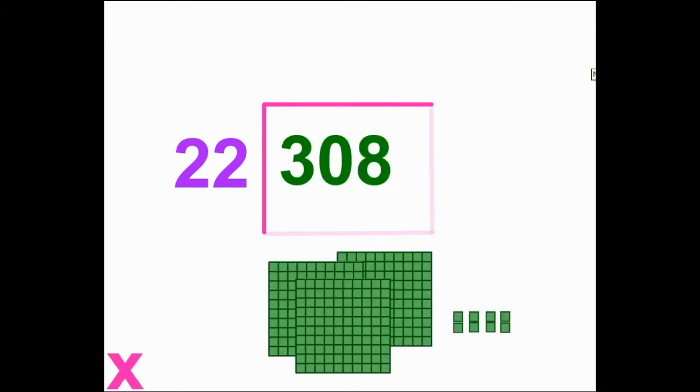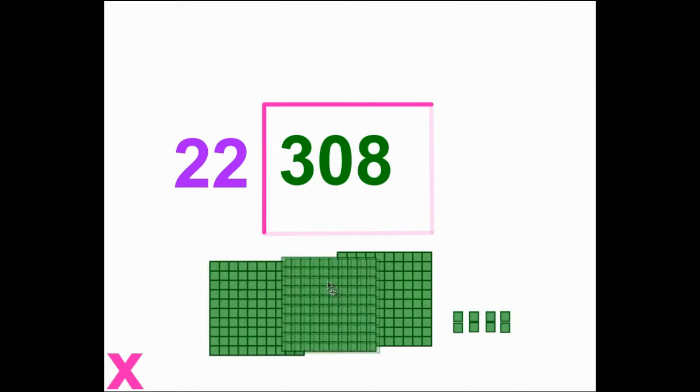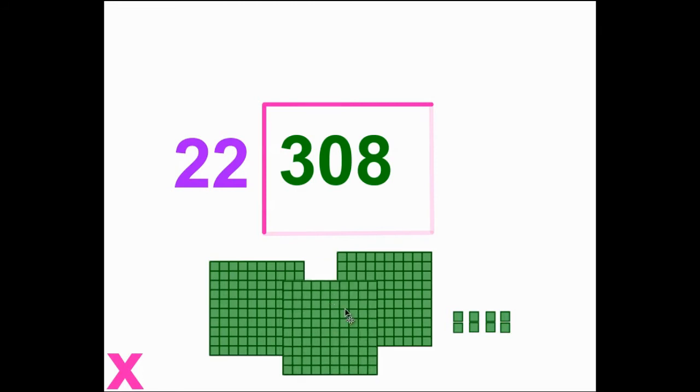308 divided by 22. Here's another unfinished rectangle. Let's pull out the amount of the dividend using the fewest number of blocks: 3 hundred squares and 8 unit blocks. This time 22 shows the height of the rectangle. The unknown side is the width.